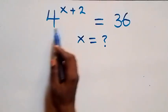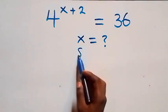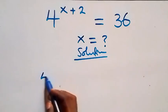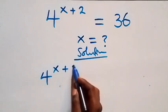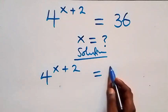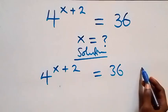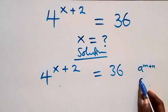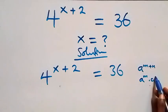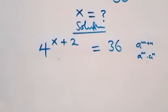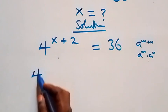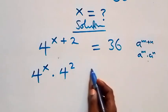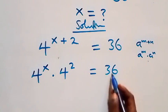Hello, welcome. How to solve this nice exponential equation. What we have is 4 raised to power x plus 2 equals 36. This follows from the law: a raised to power m plus n is the same as a raised to power m times a raised to power n. So this becomes 4 raised to power x times 4 squared equals 36.